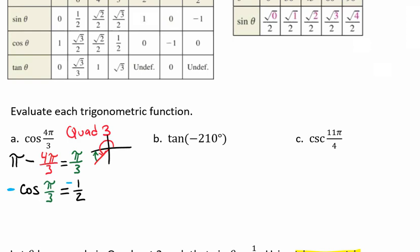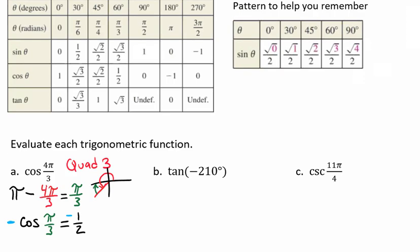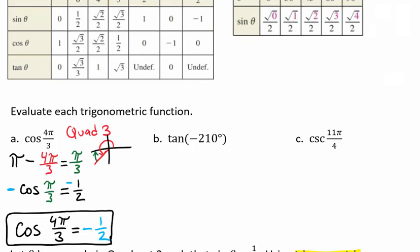And we know that because we are in the third quadrant, that cosine is going to be negative. We're going to have the negative cosine of π over 3, which happens to be negative 1 half. We can see that from our reference table, that the cosine of π over 3 equals 1 half. We're able to say that the cosine of 4π over 3 equals negative 1 half.